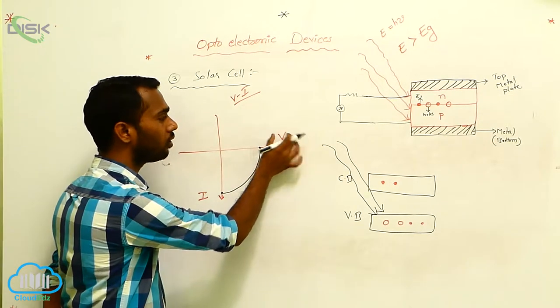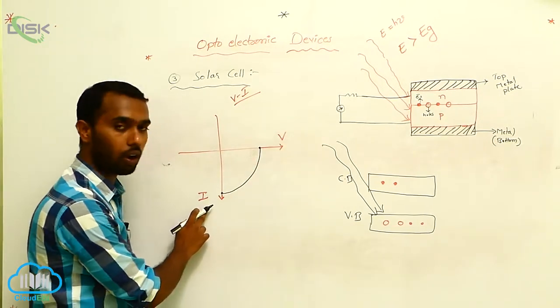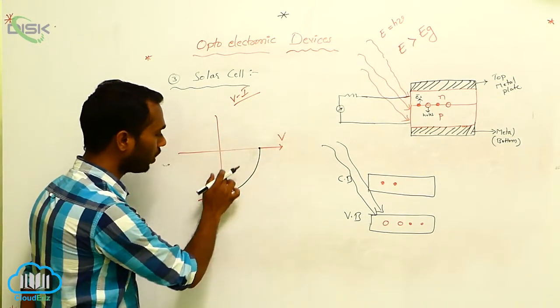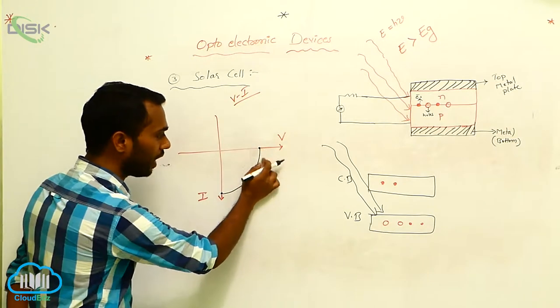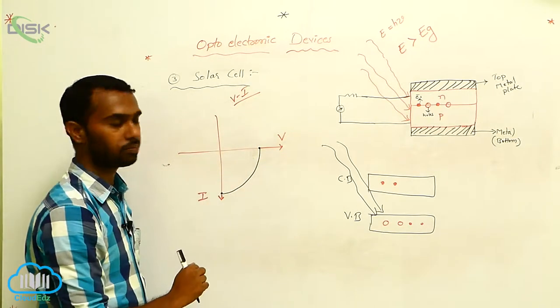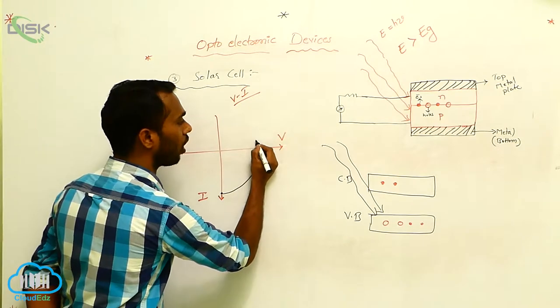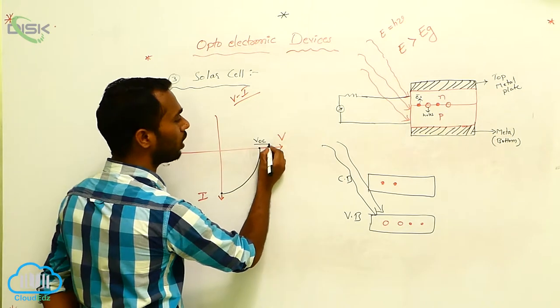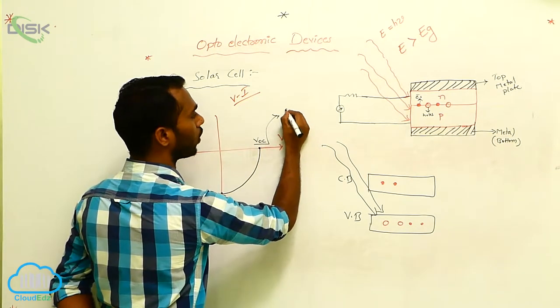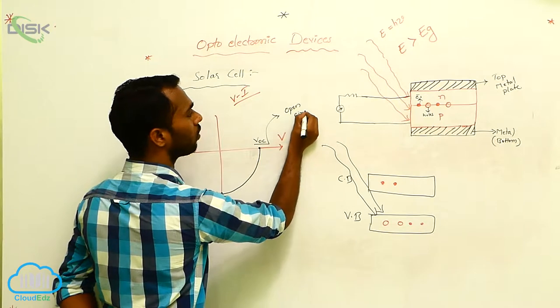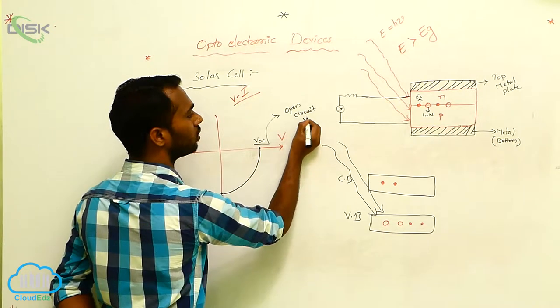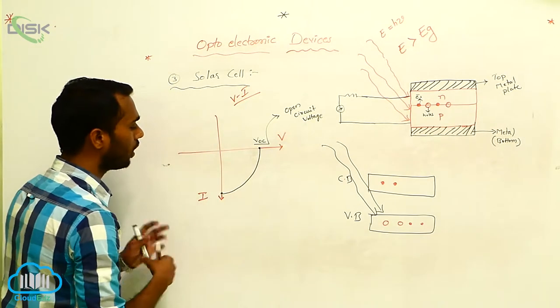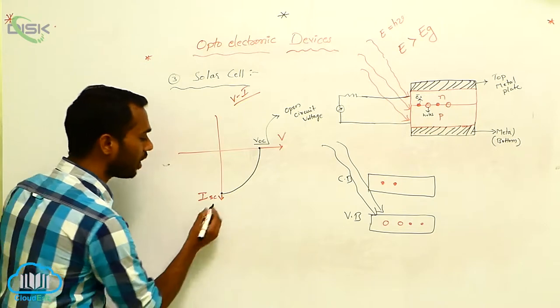If we take voltage on the x-axis and current on the y-axis, as you increase the voltage, current also increases. We get this type of curve in a solar cell. This voltage is called VOC, which means open circuit voltage, and this current is called ISC.